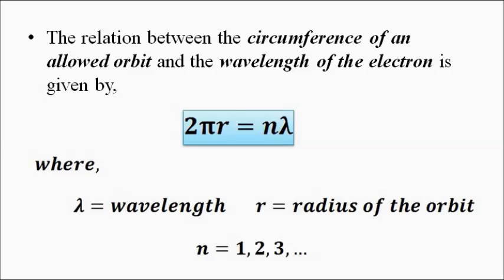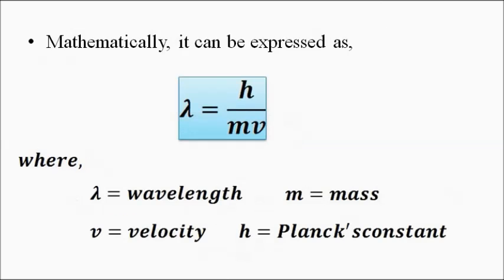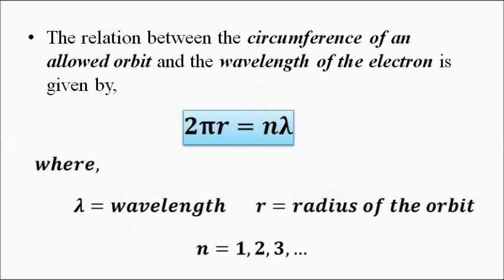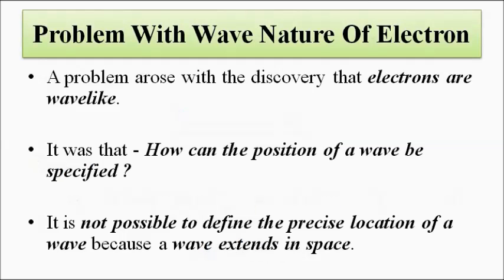Now the problem with this approach — the wave nature of the electron, that the electron moving around the nucleus behaves as a wave — is: how can the position of a wave be specified? Because a wave extends in space. We cannot determine the location of the wave accurately. How can we precisely define the location of a wave?